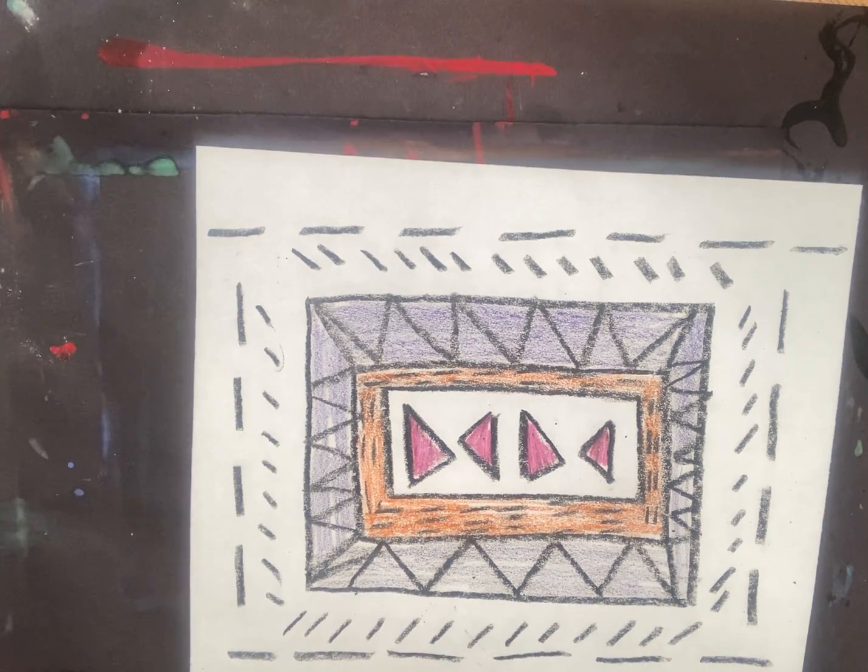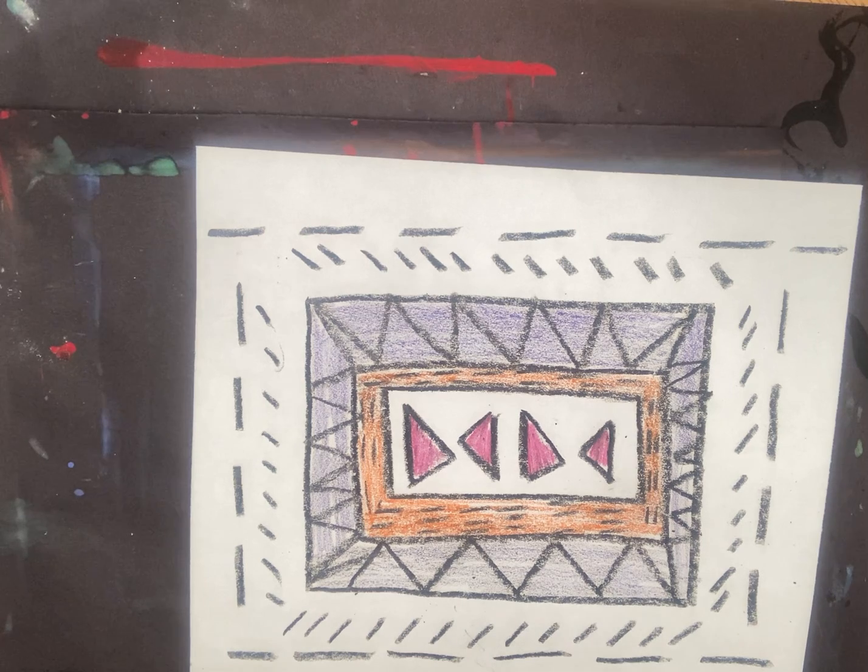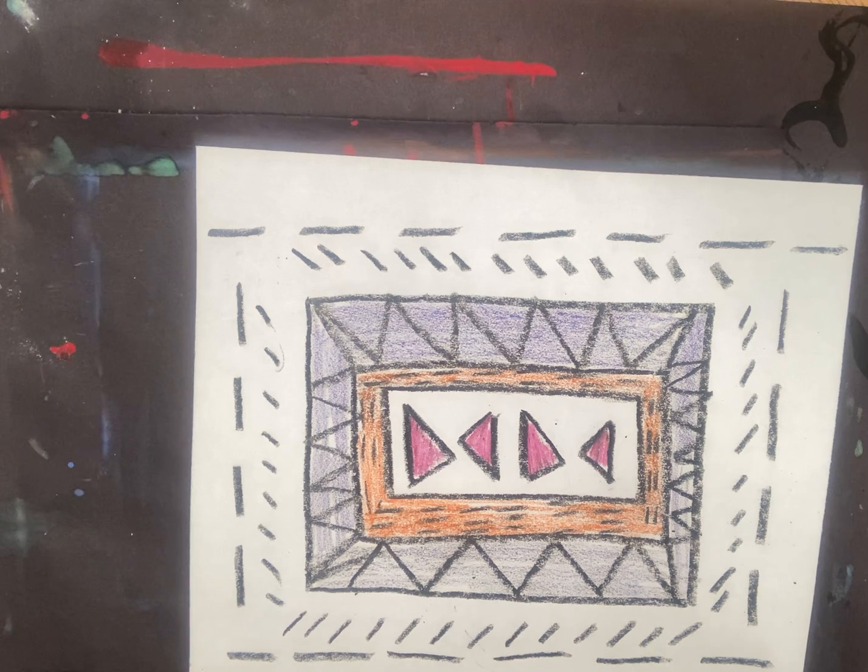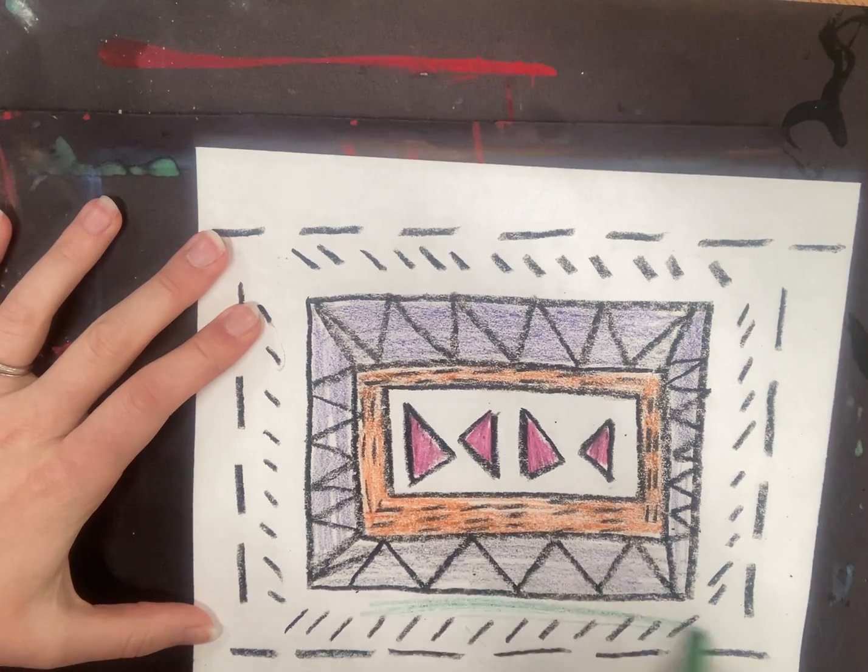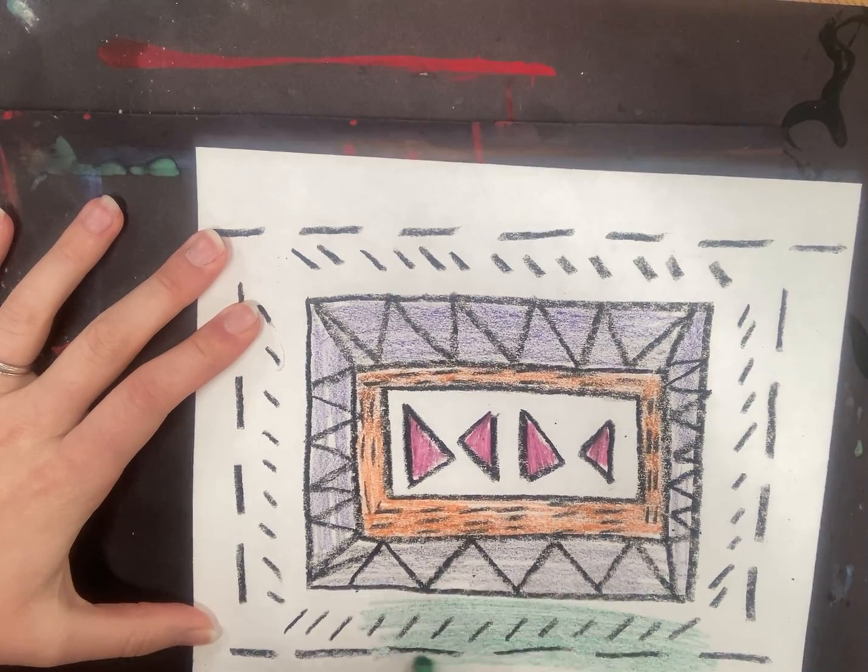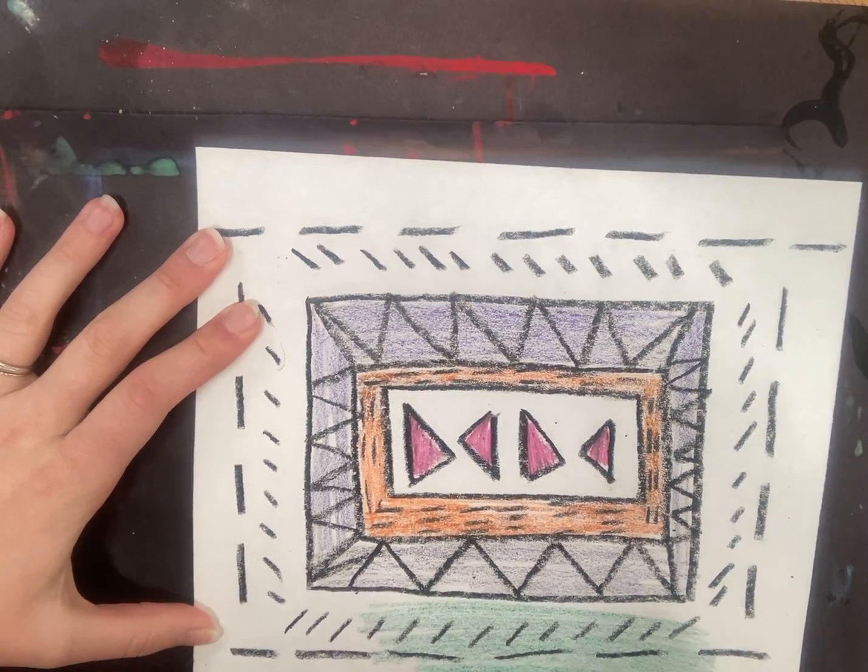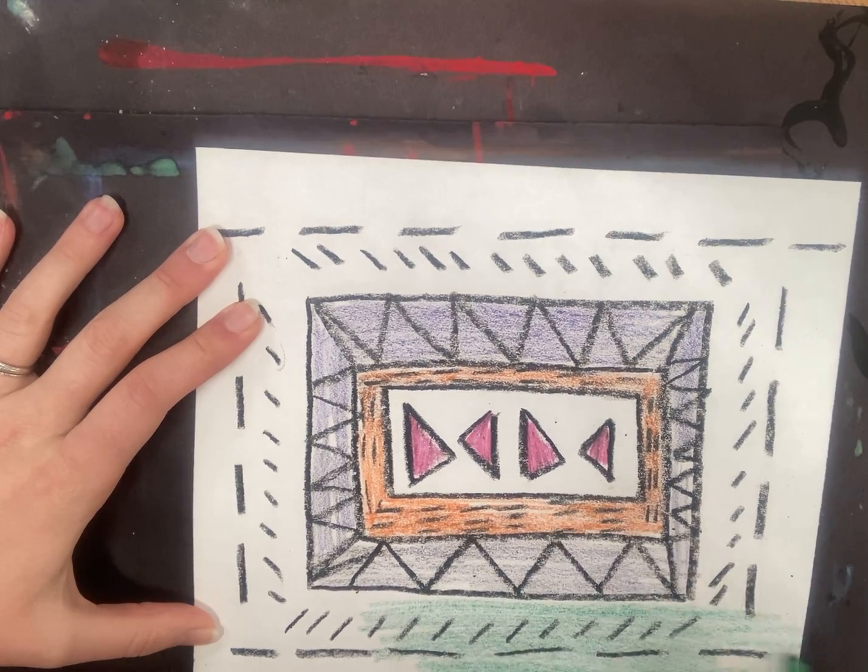And then of course, when you're all done today, don't forget to take a picture and post to the Padlet link with your first and last name. I had a couple students that didn't put their name on their art last week. Put your name and then of course your teacher's name so that we know who your art belongs to. And I'm going to add just a little more green. And finish it off on the outside.